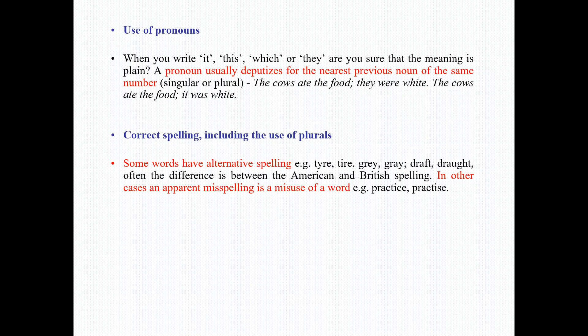For correct spelling, including the use of plurals, you should remember that some words have alternative spelling. Examples of such words are 'tired' and 'tyred,' 'gray' and 'grey,' 'draft' and 'draught.' Often the difference is between American and British spelling. In other cases, apparent misspelling is a misuse of the word, for example 'practice' and 'practise.'